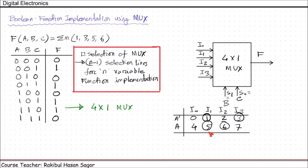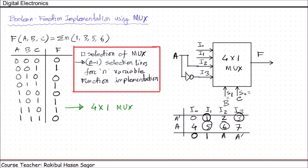Now follow these rules: if the two minterms in a column are not circled, apply 0 to that input. If both minterms in a column are circled, apply 1. If only one is circled on the A row, write A directly. If the circle is on the A prime row, write A prime. So: I0 gets 0, I1 gets 1, I2 gets A, and I3 gets A prime. Connect A directly to I2, connect A prime to I3, connect constant 0 to I0, and constant 1 to I1. Now this MUX will act according to this function.